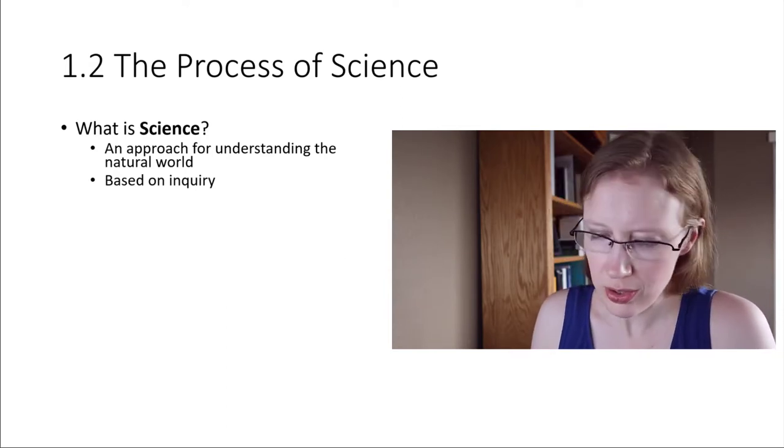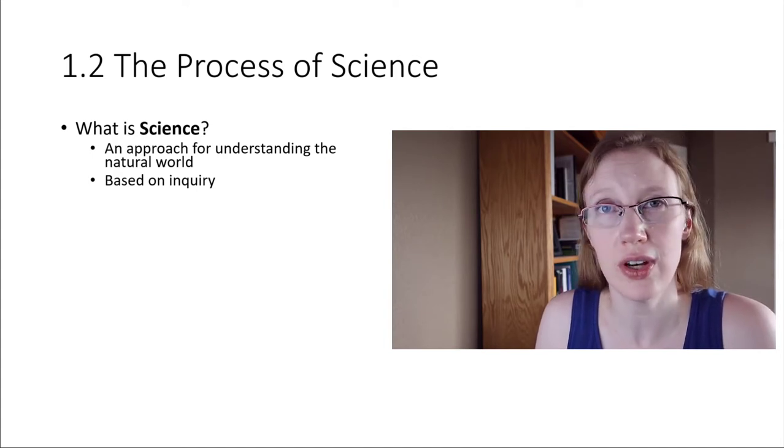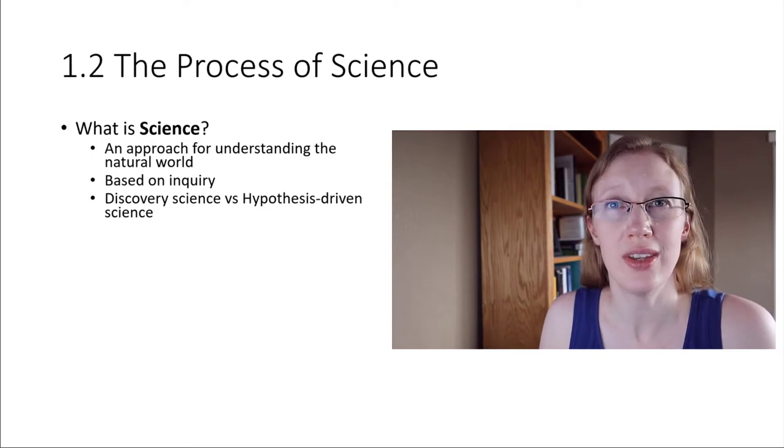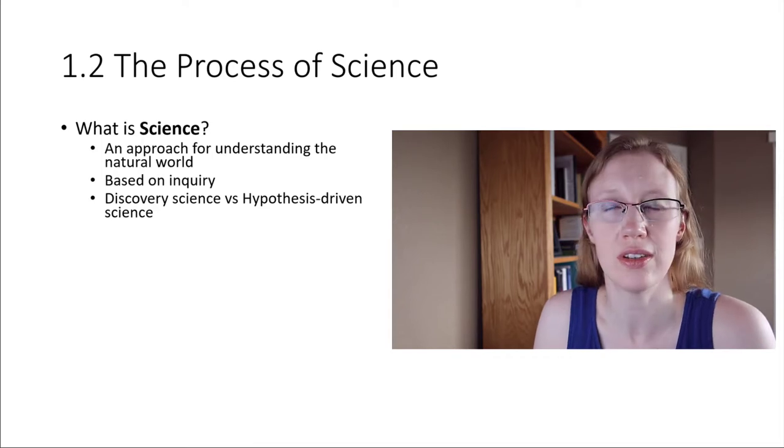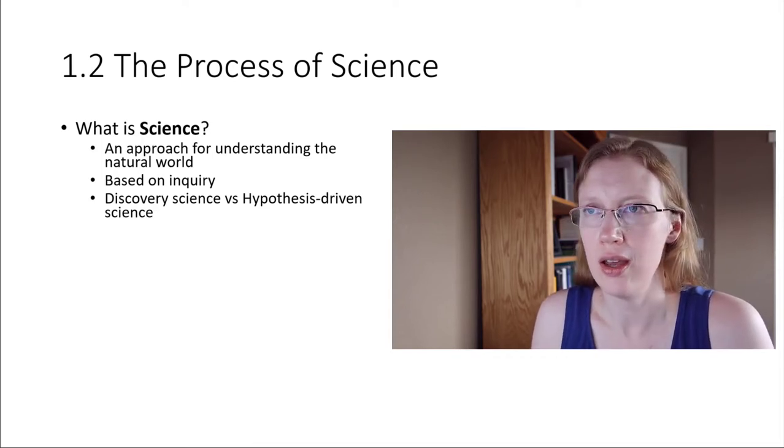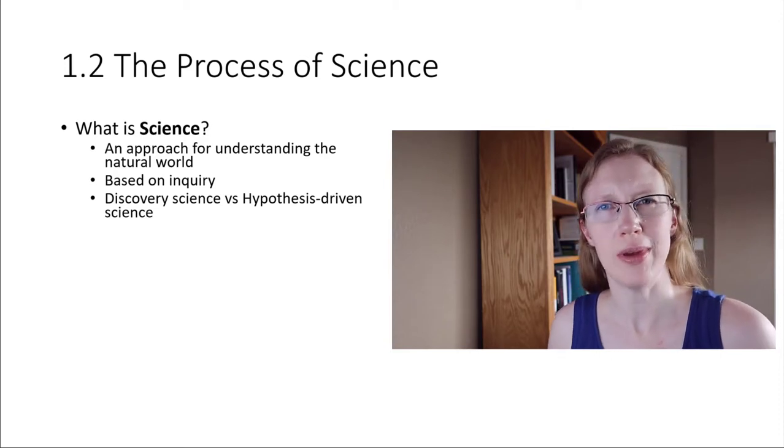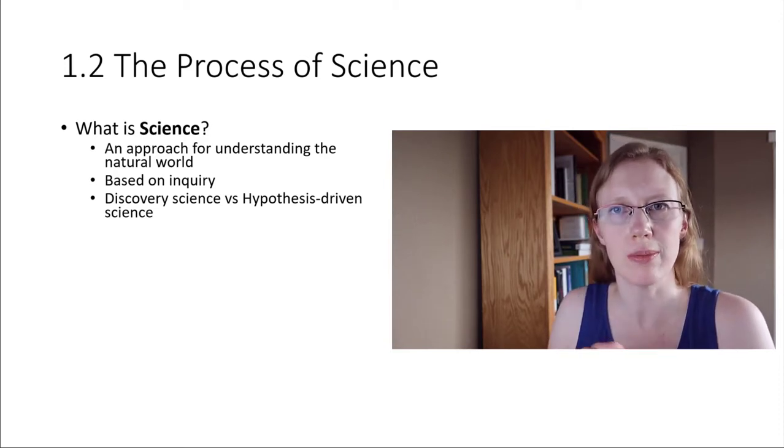There are sort of two different styles of doing science. There's something called discovery science. A good example of this is Jane Goodall with chimpanzees and going out in nature and just kind of observing things. She was discovering things about the world around her. So discovery science, it's all about describing nature. That involves keeping a notebook, taking observations.